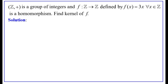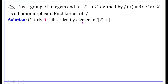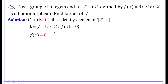Solution: since Z is a group of integers with respect to addition, clearly 0 is the identity element of the group Z. By definition, ker(F) is the set of all elements of the domain group Z which are mapped into the identity element of the co-domain group Z. That is, we need F(X) equals 0.